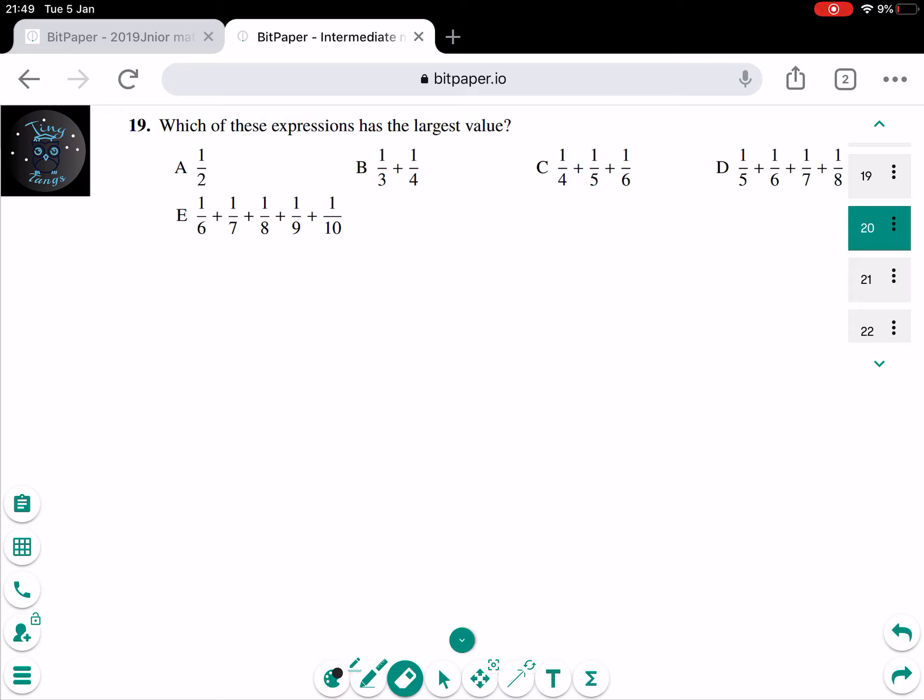And for question 19, it might seem scary, but you don't actually need to do, like for example, 6, 1, like a 6, a 7s plus an 8s. Okay, 56, 6 times 56. No, that is not needed. So A is half, a half.